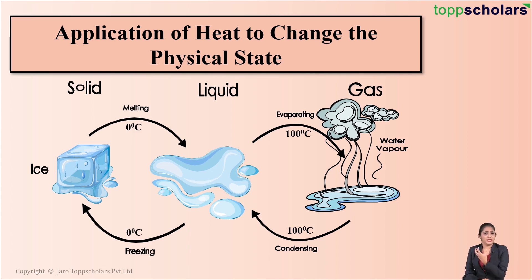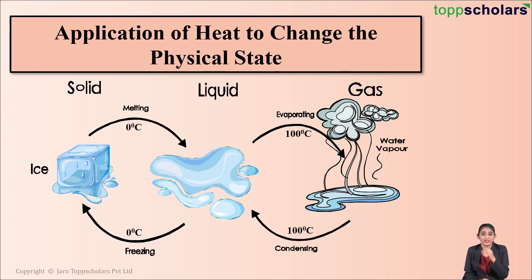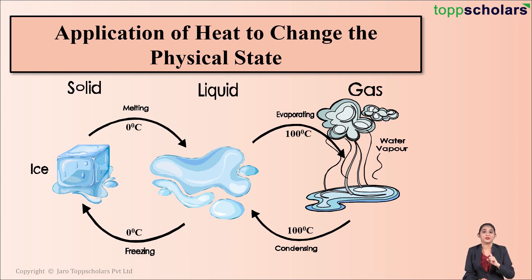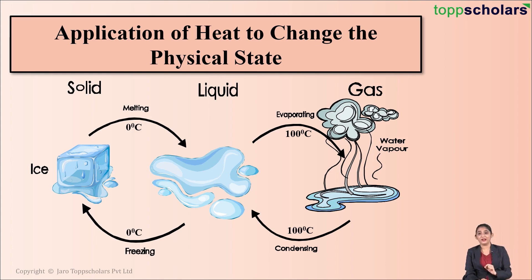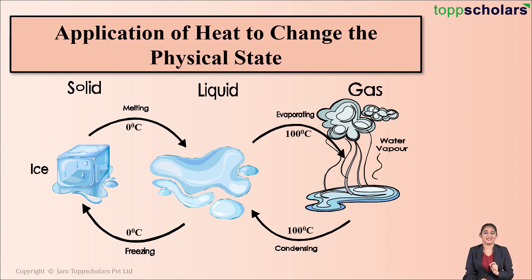If this water vapor — which is the gaseous form of water — is cooled down to 100 degree Celsius, it gets converted into liquid water. That means the gaseous state is converted into the liquid state; water vapor gets converted into liquid water. This process is called condensation. Water vapor condenses into liquid water at 100 degree Celsius. Remember, by applying heat or by removing heat, you can easily change the physical state.